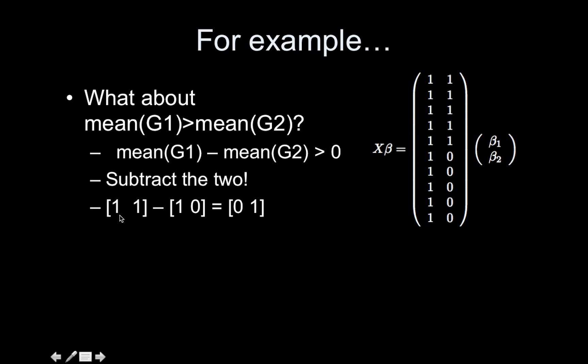Replacing each mean with its corresponding contrast: the mean of group one is [1, 1] and the mean of group two is [1, 0]. Subtracting: one minus one equals zero, and one minus zero equals one. So the contrast zero, one tests if group one is greater than group two. If you want to test if group two is larger than group one, use the contrast zero, negative one.